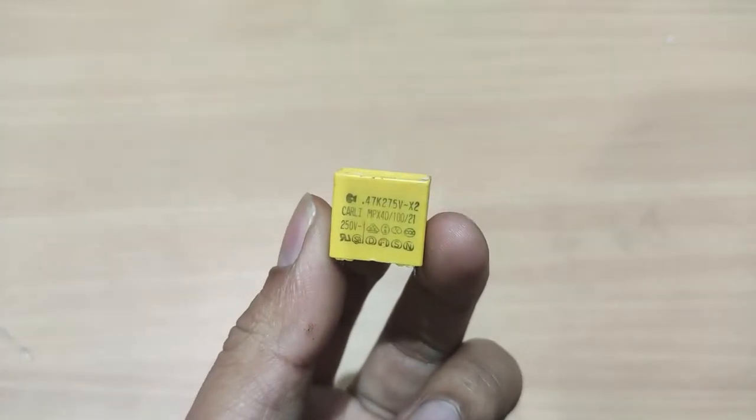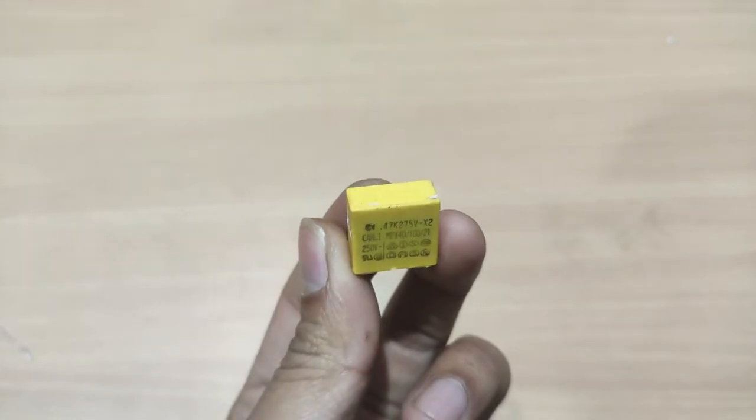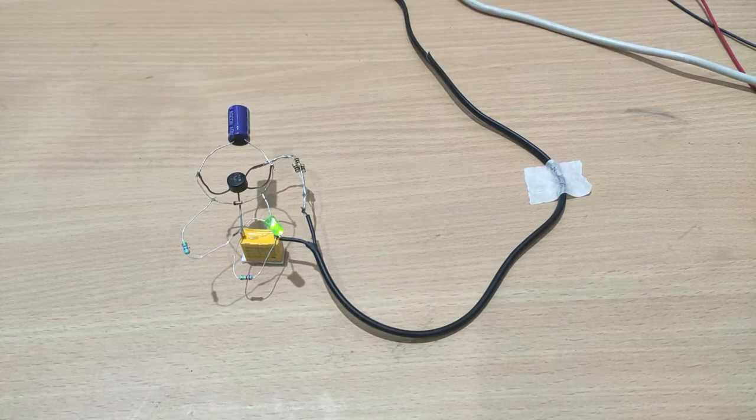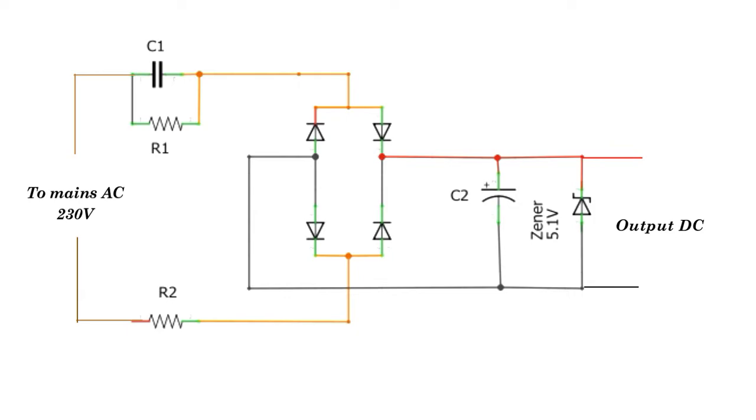In the capacitor, the mains voltage is dropped by the capacitor. The circuit is here. It is the mains AC at 230V. The capacitor drops the voltage. The R1 resistor and capacitor are connected to AC.